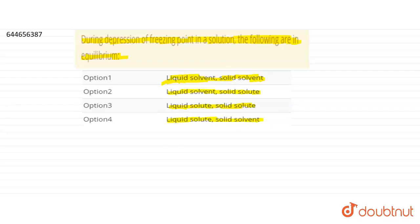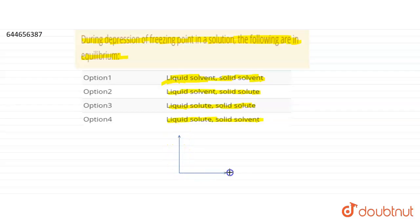First of all, you have to know what the graph of vapor pressure versus temperature looks like for the depression in freezing point. Let me draw it. Here is vapor pressure of the solution on the y-axis, and here is the temperature in Kelvin on the x-axis. The graph between vapor pressure and temperature will be like this.